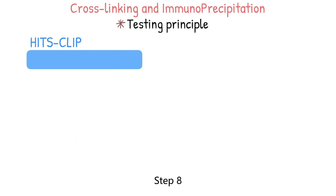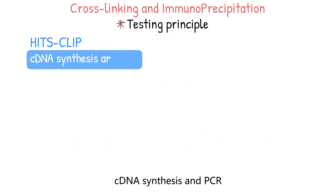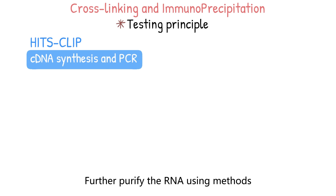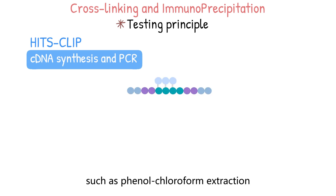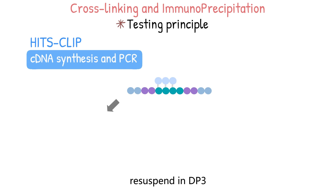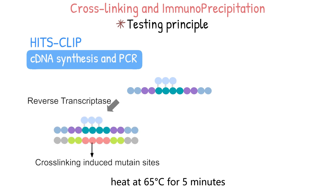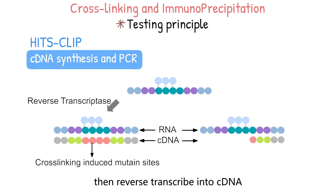Step 8: cDNA synthesis and PCR. Further purify the RNA using methods such as phenol-chloroform extraction, resuspend in DEPC water, heat at 65 degrees Celsius for 5 minutes, then reverse transcribe into cDNA and perform PCR amplification.